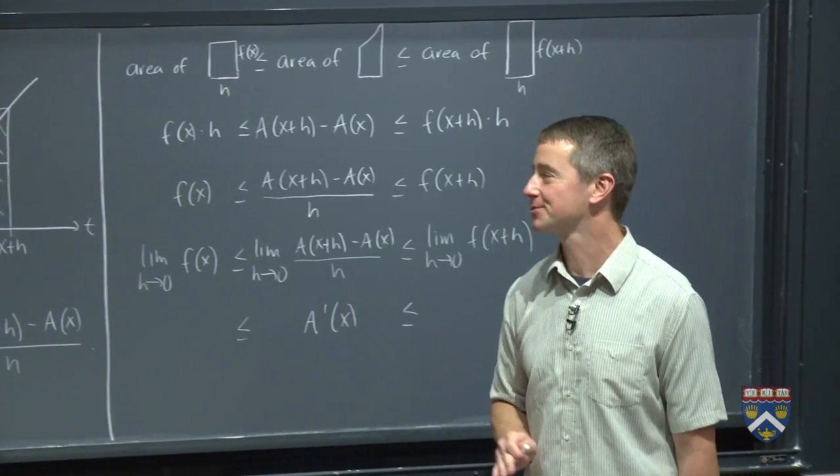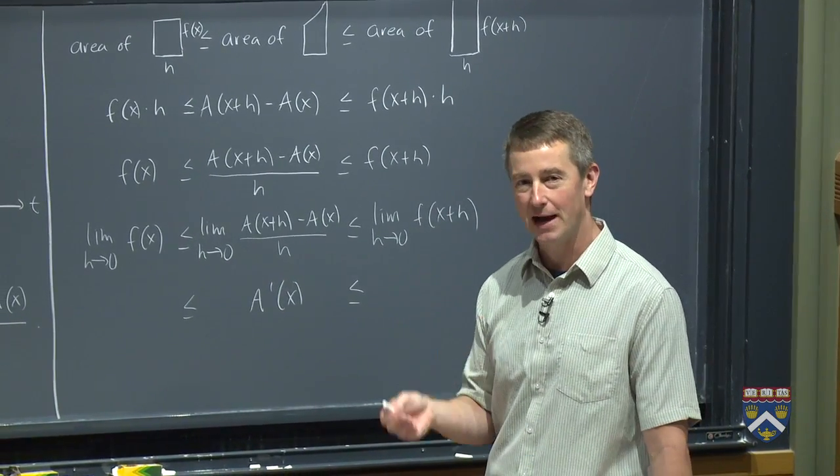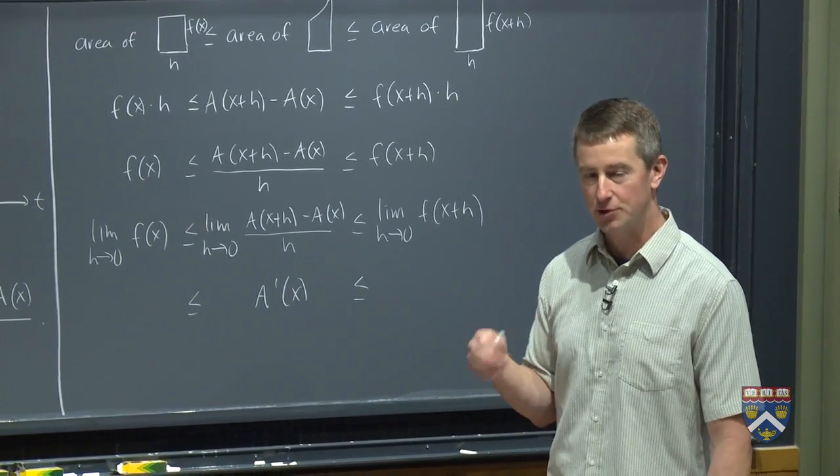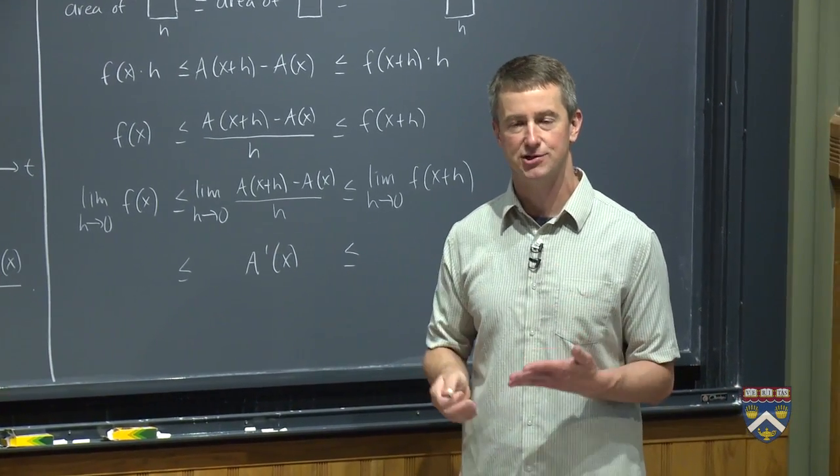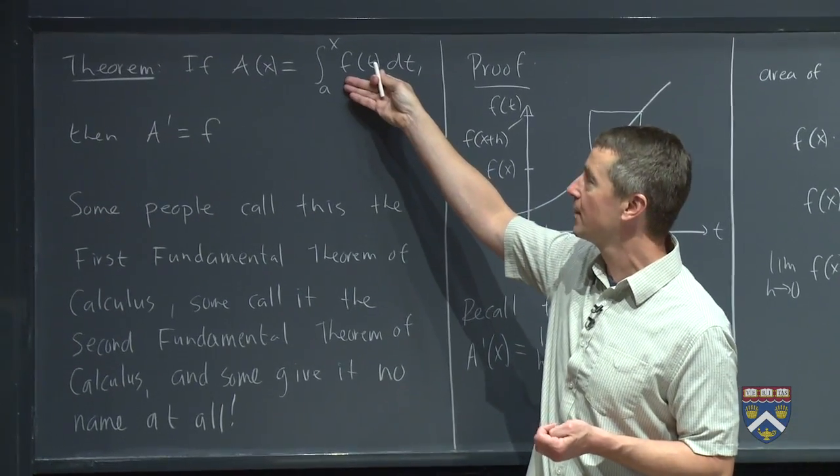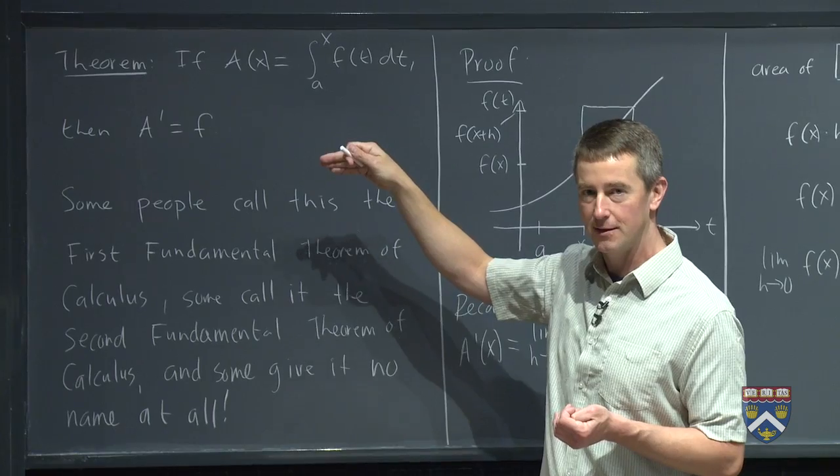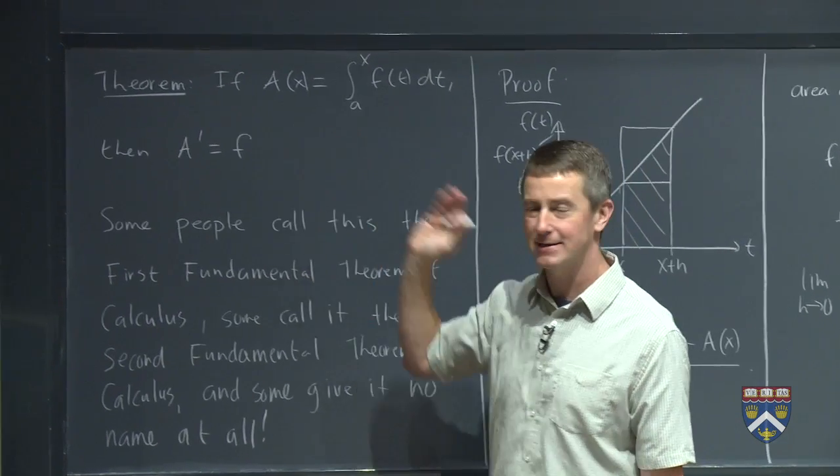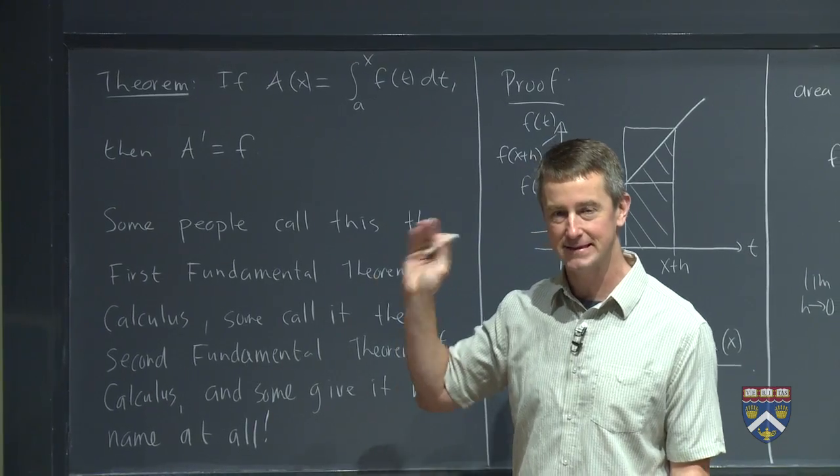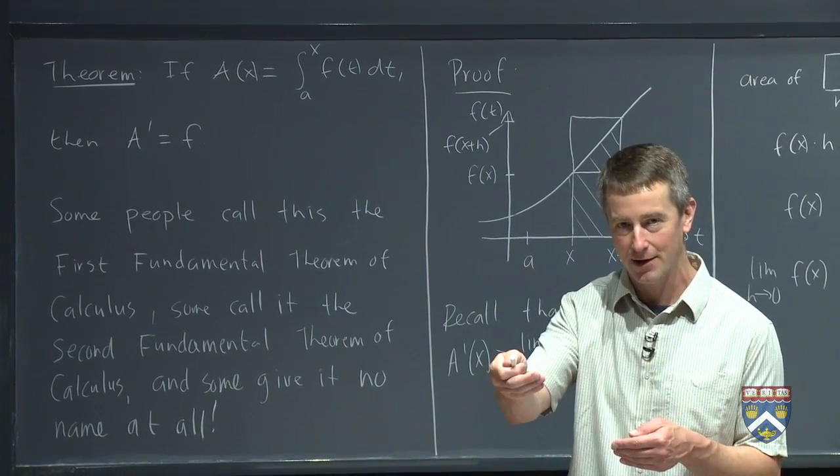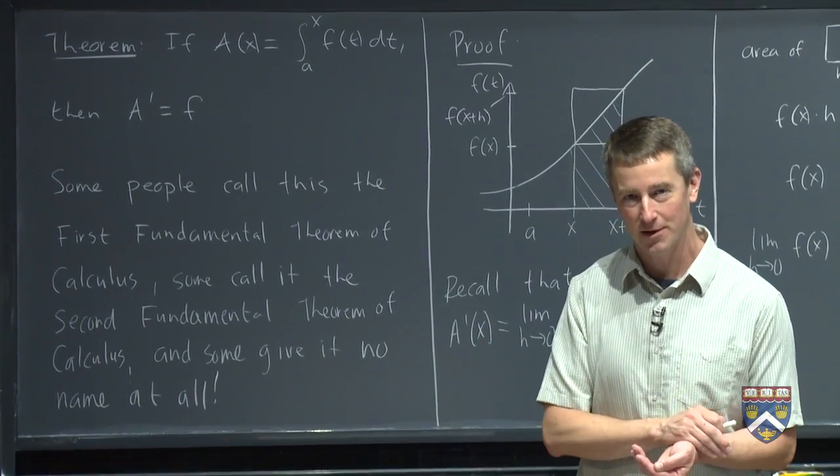And remember, this is a sort of longish proof, but what are we trying to prove? We're trying to prove that a prime is little f. That the two examples we just did was not just a coincidence. That if you start with some function, little f, and you create this area function, and then you decide to take the derivative of that area function, you're right back to the little f that you started with. That somehow there's this very fundamental connection between finding the area under a curve and finding the slope of a curve.